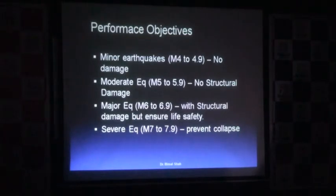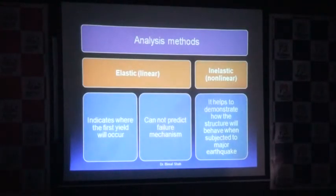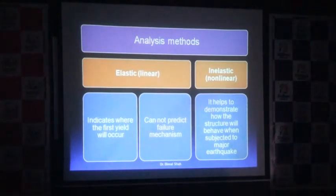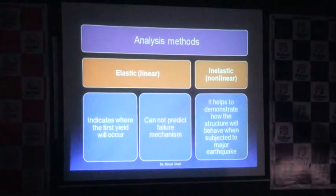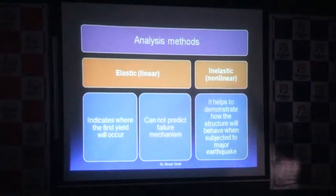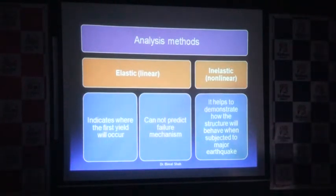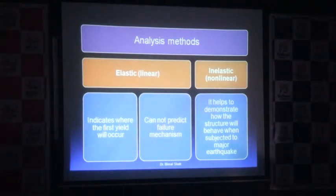Analysis methods — there are two types: elastic, which is based on the linear range, and inelastic, which we call as the non-linear range. The elastic will indicate where the first yield will occur and cannot predict the failure mechanism — how or where failure is going to occur, we do not know. Whereas the inelastic non-linear method helps to demonstrate how the structure will behave when subjected to a major earthquake.